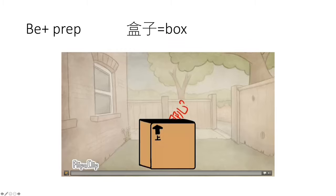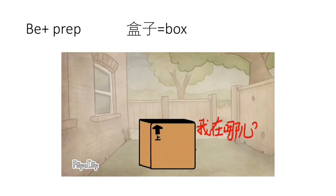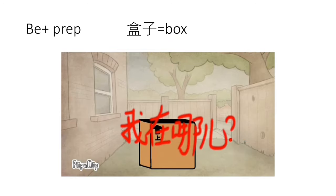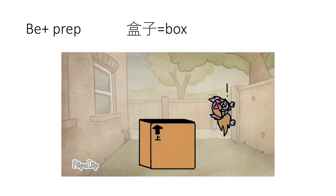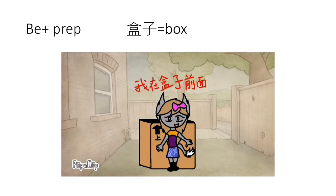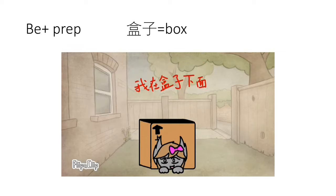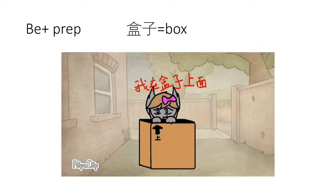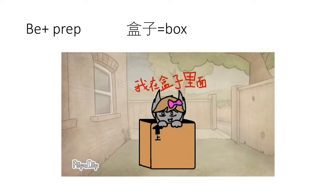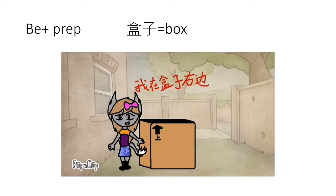Wǒ zài nǎ? 盒子前面 (in front of the box). 我在盒子后面 (behind the box). 我在盒子下面 (under the box). 我在盒子上面 (above the box). 我在盒子里面 (inside the box). 我在盒子左边 (to the left of the box). 我在盒子右边 (to the right of the box).